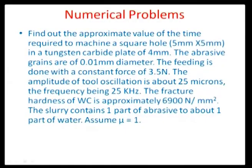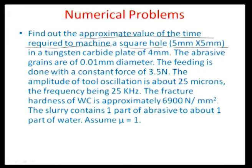Today we will do a numerical design of one such machining operation and estimate the material removal rate using Shaw theory. The problem: find the approximate machining time needed for a square hole of 5 mm × 5 mm in a tungsten carbide plate of 4 mm thickness — a volume of 100 mm³. The abrasive grains have a diameter of 10 microns (0.01 mm).